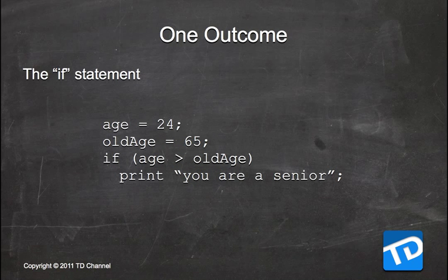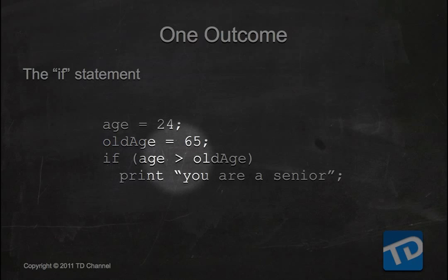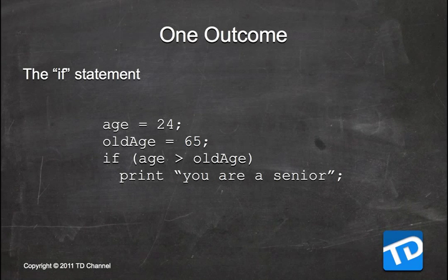Let's look at an example. This is a control flow with one single outcome and one single test — on most programming languages this is called the if statement. Here we have a variable called age equal to 24, and another called old_age equal to 65. If age is greater than old_age, then we print 'you are a senior.' We're comparing age against old_age, and since age is 24 and old_age is 65, you are not going to get that print. But this is an example of how the if statement works.